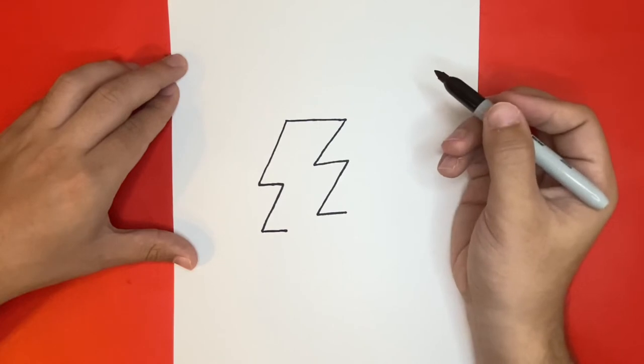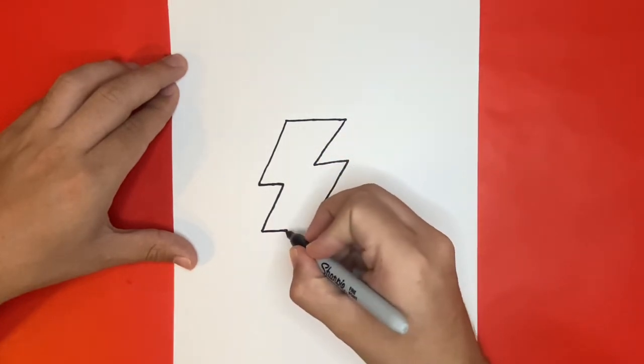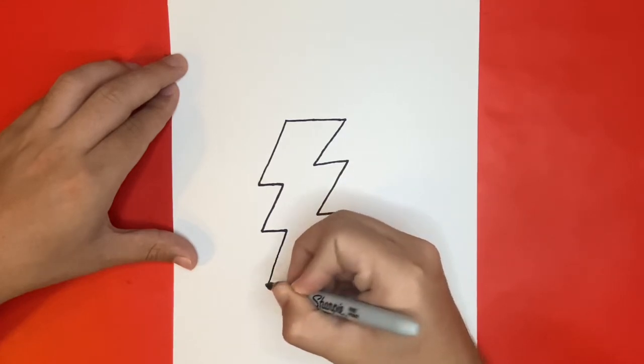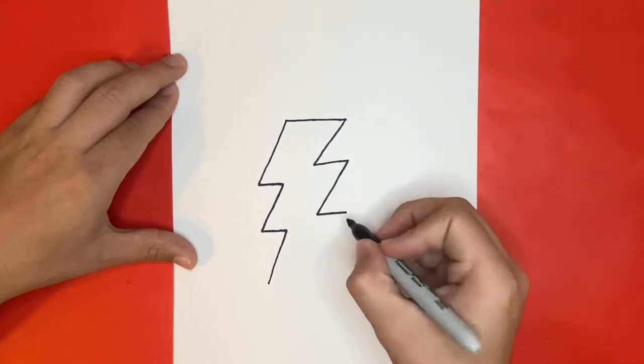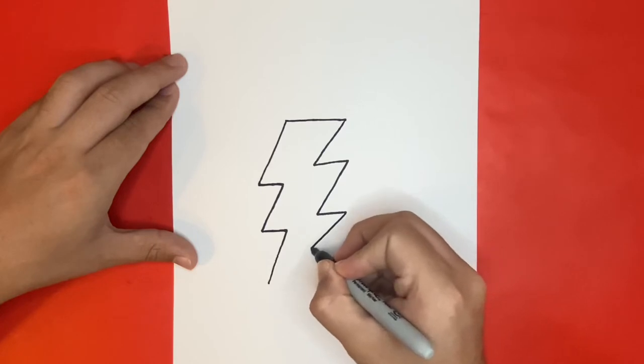Now to draw the bottom of our lightning bolt, we're going to draw two lines that'll come down from the points on the left and right-hand side. And if you're enjoying today's video so far, then be sure to give it a big like by hitting the thumbs up button right below.